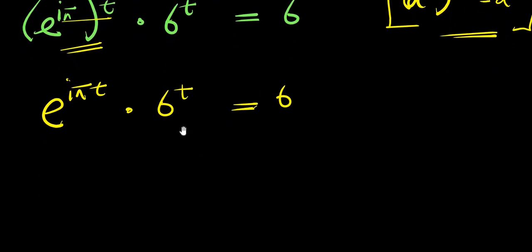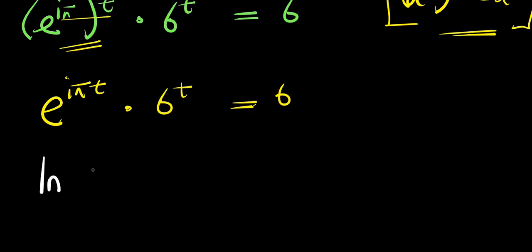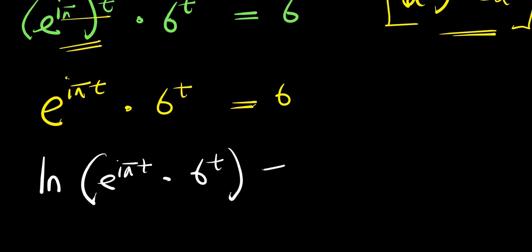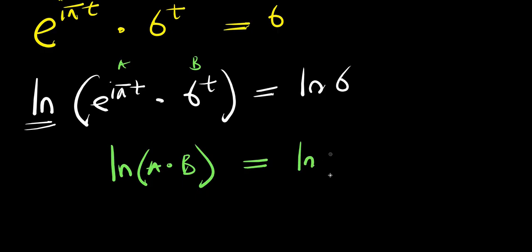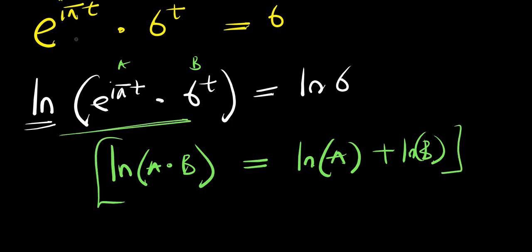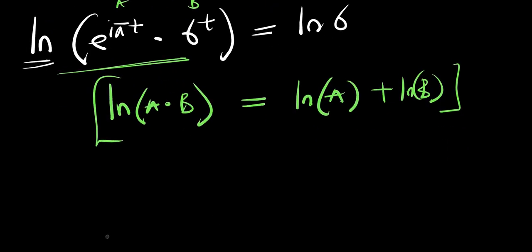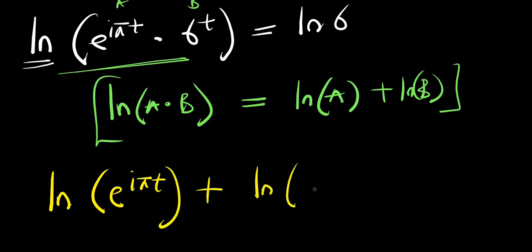At this point we apply the natural log to both sides, giving ln of e^(iπt) times 6^t equals ln of 6. Using the property ln(a times b) equals ln(a) plus ln(b), this becomes: ln of e^(iπt) plus ln of 6^t equals ln of 6.